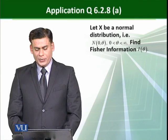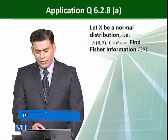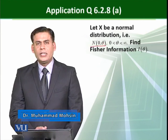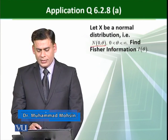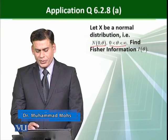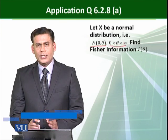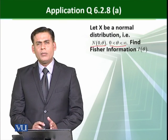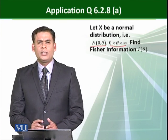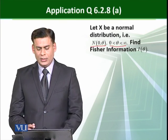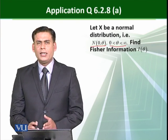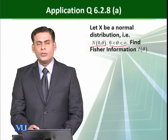Let X be the normal distribution having mean 0 and variance theta, and its range from 0 to infinity of theta. Theta's range is 0 to infinity. Normal range is from minus infinity to infinity. Parametric space is defined here, that is from 0 to infinity.